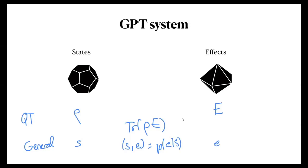A single GPT system has a set of states, which is a convex set, and a set of effects, which also has convex structure. In quantum theory, the set of states are given by density operators, and the set of effects are given by POVM elements. The probability is computed by the trace. A general GPT system will have a convex set of states S and a convex set of effects E, embedded in real vector spaces with probabilities computed via an inner product.